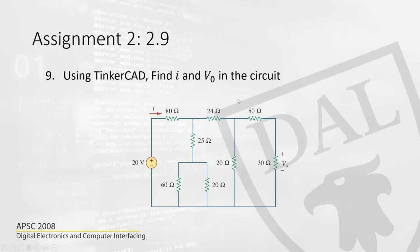Apart from that, you will also have to find the voltage V0. So you will have another meter and connect it across this terminal and this terminal, so you will know the voltage drop across this resistor. You technically don't need to provide a screenshot, but I would appreciate it if you could. If not, just writing down the current and the voltage will be sufficient.